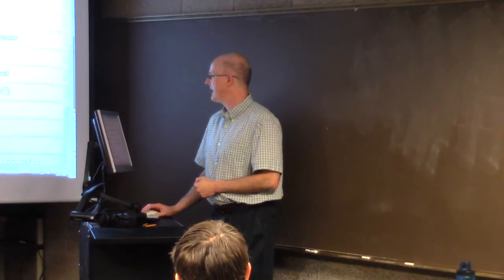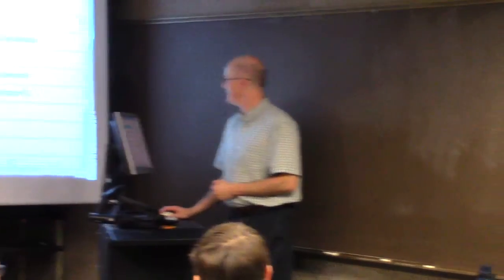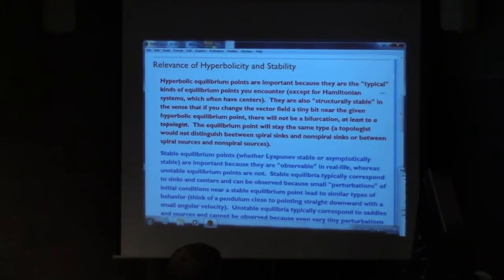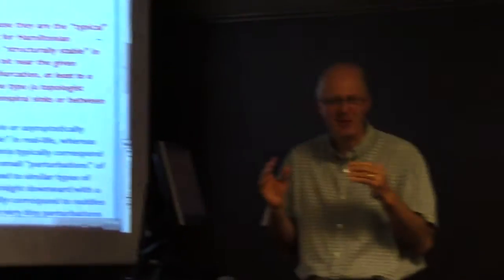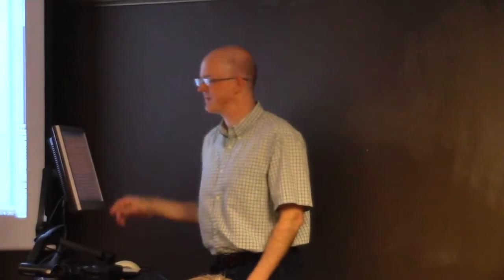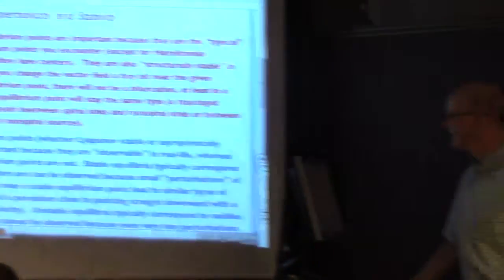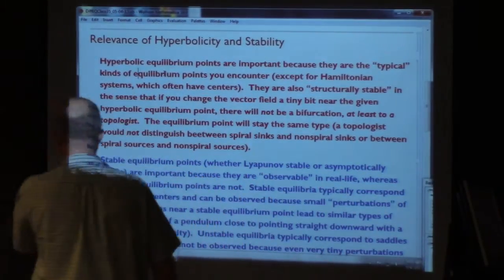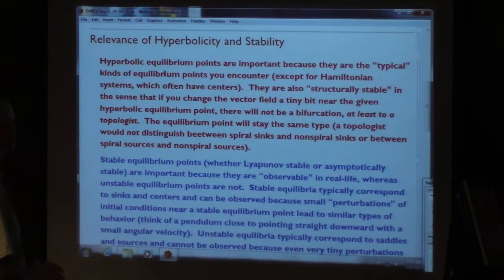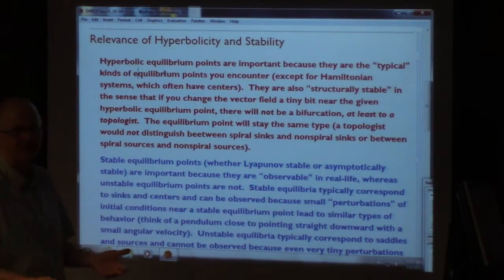Let's start by talking about the relevance of hyperbolicity and stability — these ideas in that first extra reading assignment. What do you need to know? I'm not quite sure yet, but it's very possible I could ask true-false questions, multiple choice questions, or maybe even short essay questions related to what I'm saying here. Let's look on the screen. First, look at the part referring to hyperbolic equilibrium points. What's their relevance? Why are they important? They're important because they are typical kinds of equilibrium points — maybe you might even say nice.